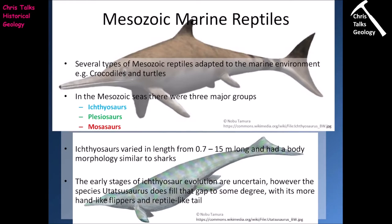In the Mesozoic in particular, we see the evolution of three very large apex marine predators that were reptiles. These groups are the ichthyosaurs, the plesiosaurs, and the mosasaurs.